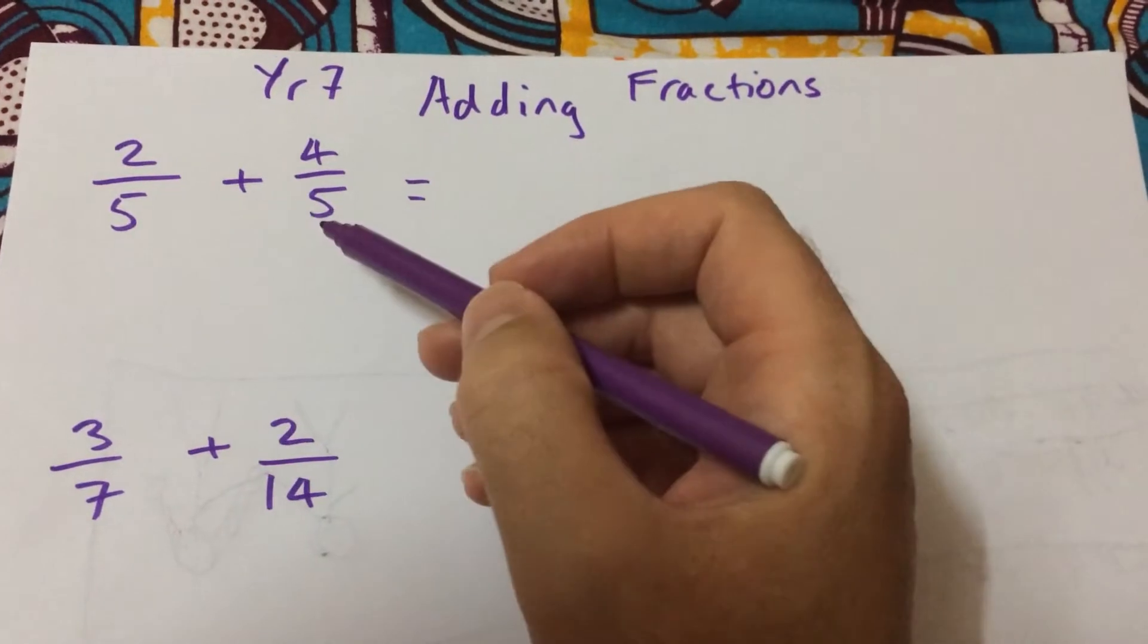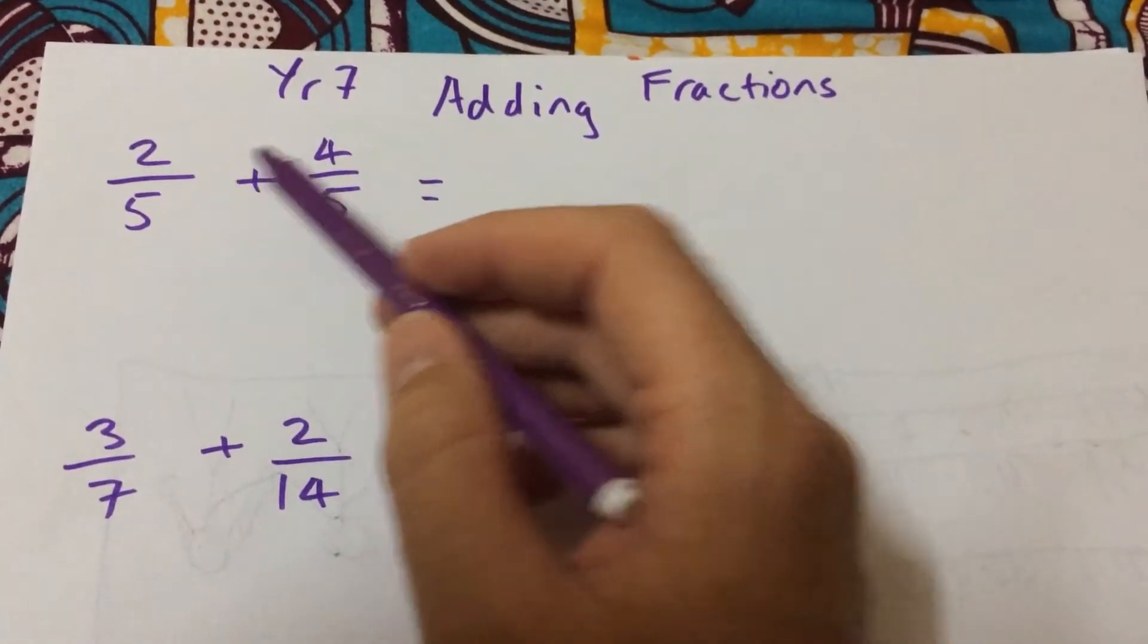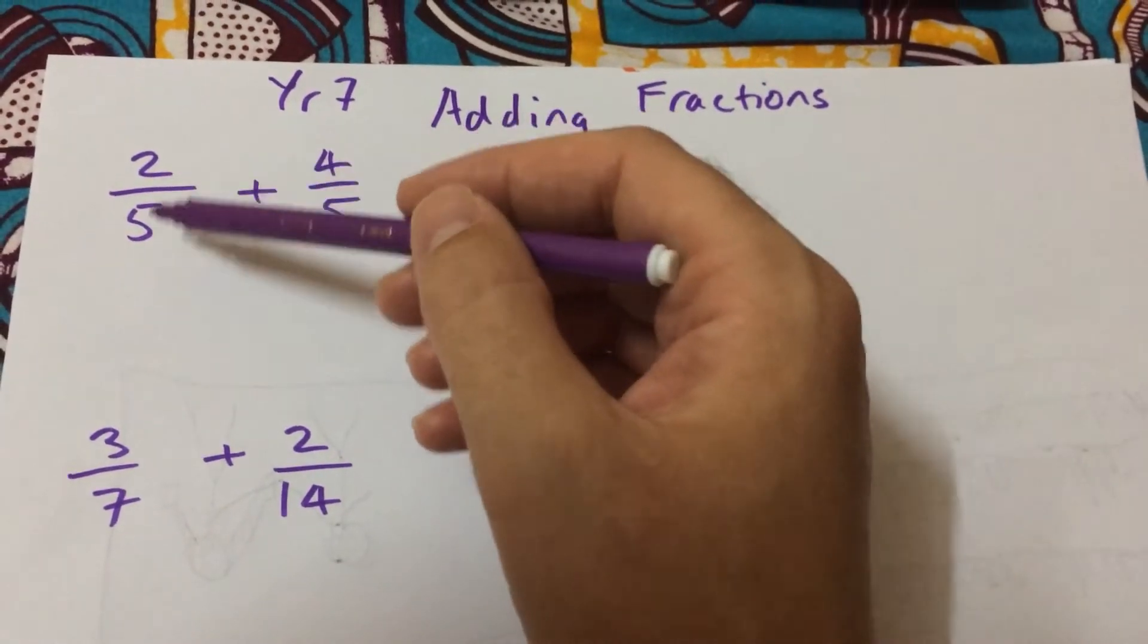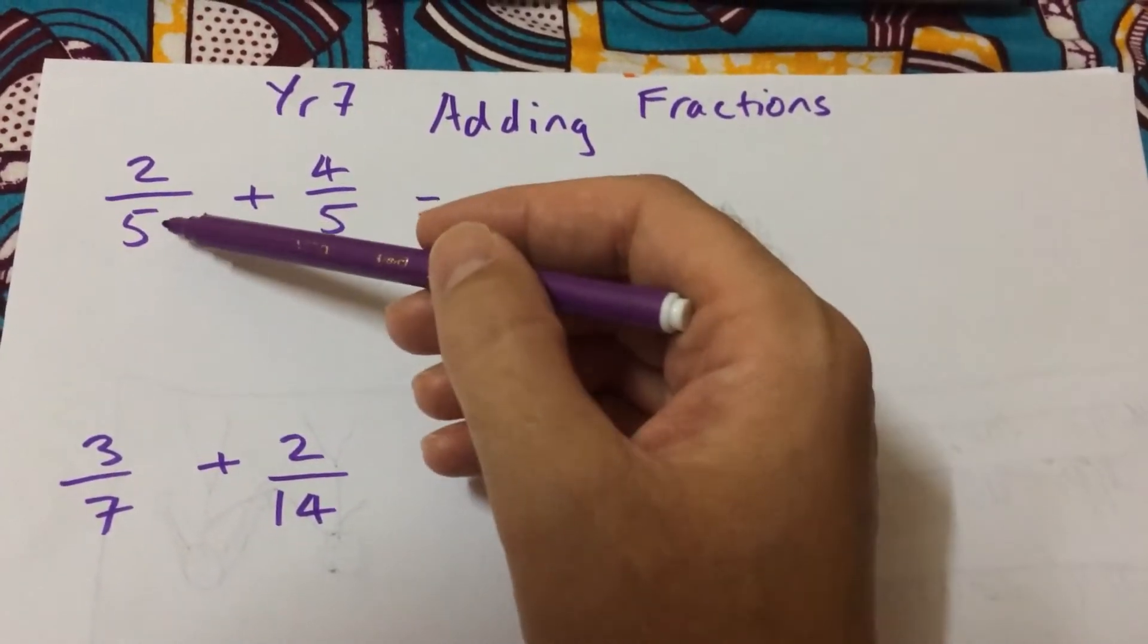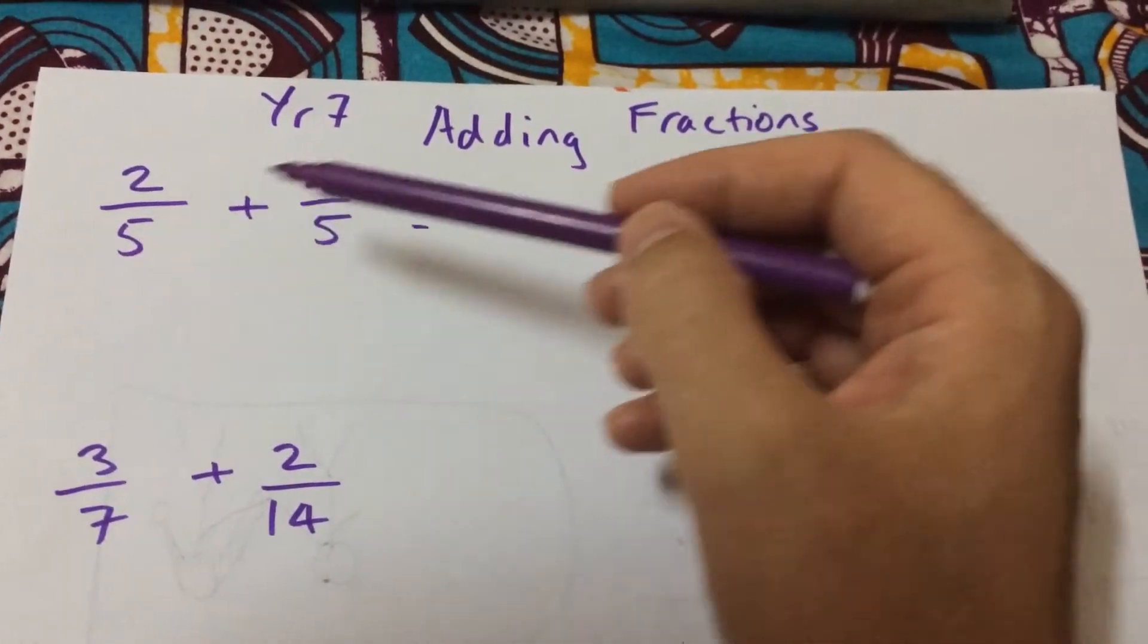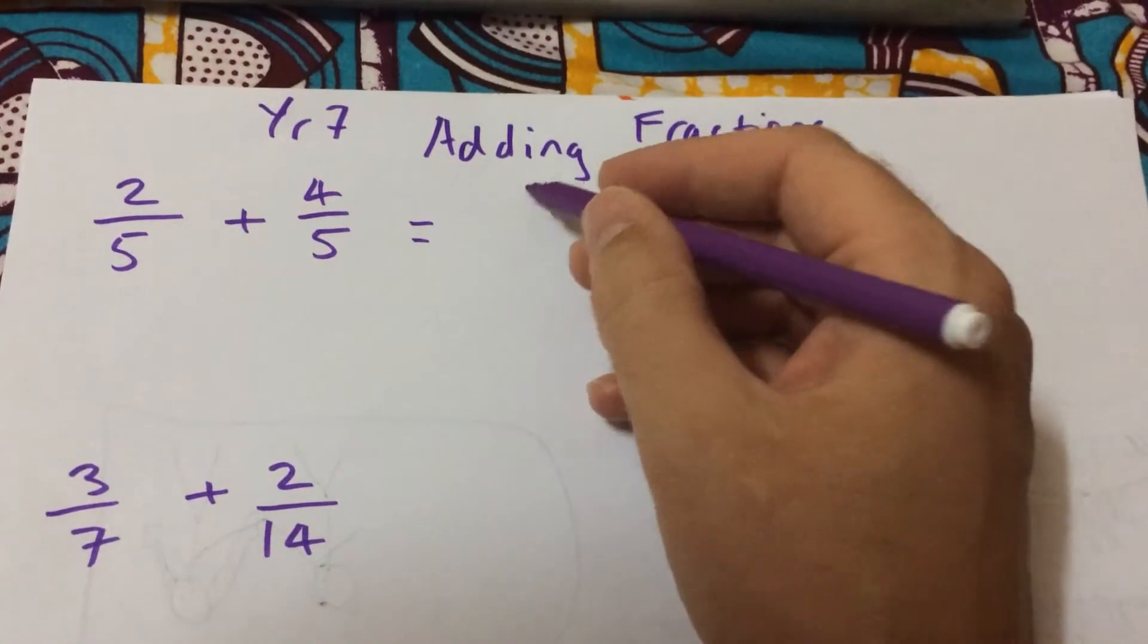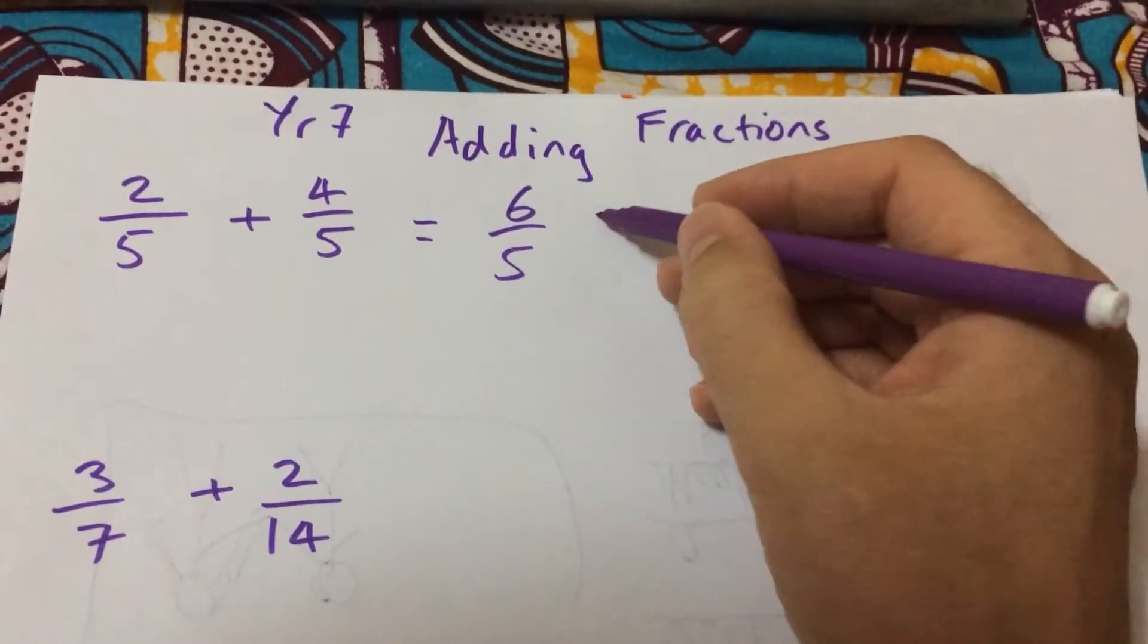Now, if the denominator is the same, we don't have to do much, we just have to add the numerator. Because remember, we've got two fifths here. The denominator, the fifths is what we're adding, so we don't do anything with them. I've got two of them and four of them. So I've got two of something plus four of something, I'll have six of that something.